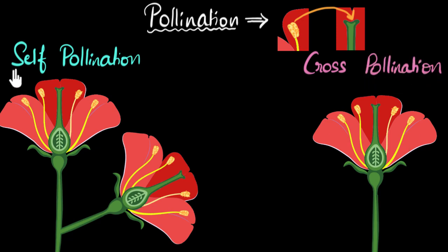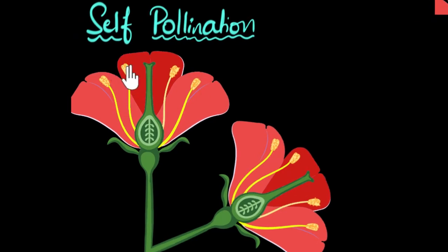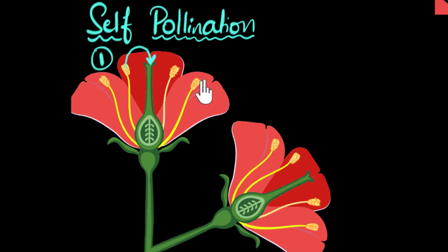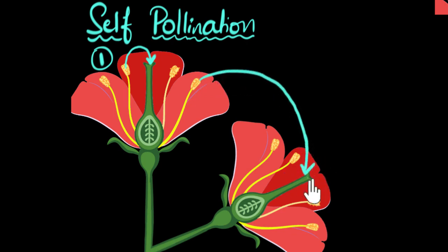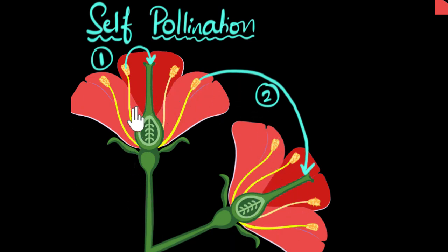Self-pollination, as the name suggests, is when pollen grains are transferred within the same plant itself. One way that can happen is if pollen grains are transferred within the same flower — from the anther to the stigma of the same flower. But even if pollen grains are transferred from the anther to the stigma of a different flower belonging to the same plant, that is also self-pollination, because the pollen grains are still being transferred within the same plant.